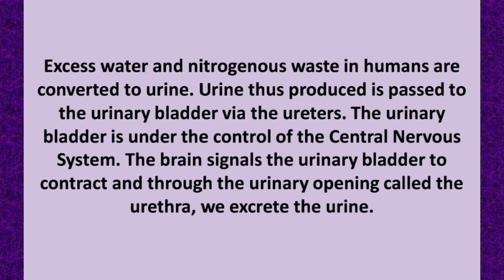The water and nitrogenous waste in humans are converted to urine. The urine passes to the urinary bladder via the ureters. The urinary bladder is under the control of the central nervous system; the brain signals the urinary bladder to contract, and urine is excreted through the urinary opening called the urethra.